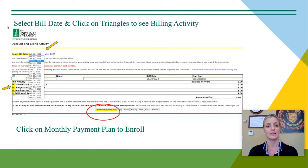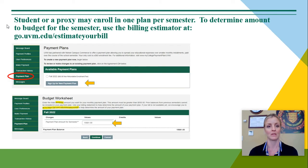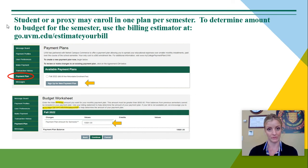You will select the bill date and click on the triangles to see the billing activity. Down at the bottom, click on monthly payment plan to enroll. Remember that the student or proxy may enroll in one plan per semester. To determine the amount to budget for the semester, use the billing estimator at go.uvm.edu/estimate-your-bill.